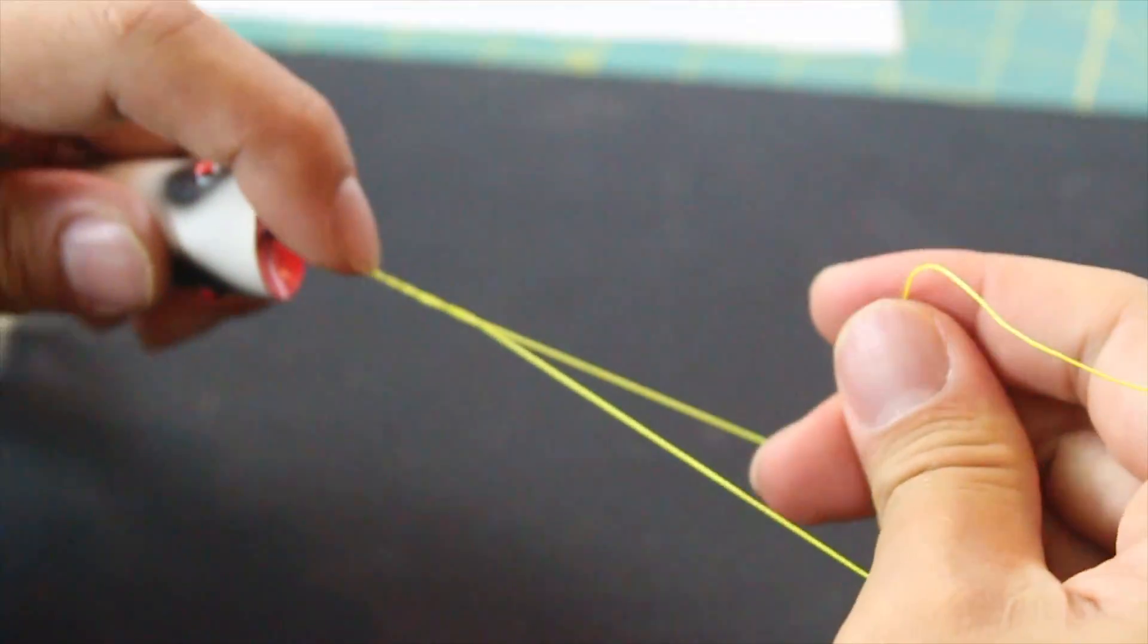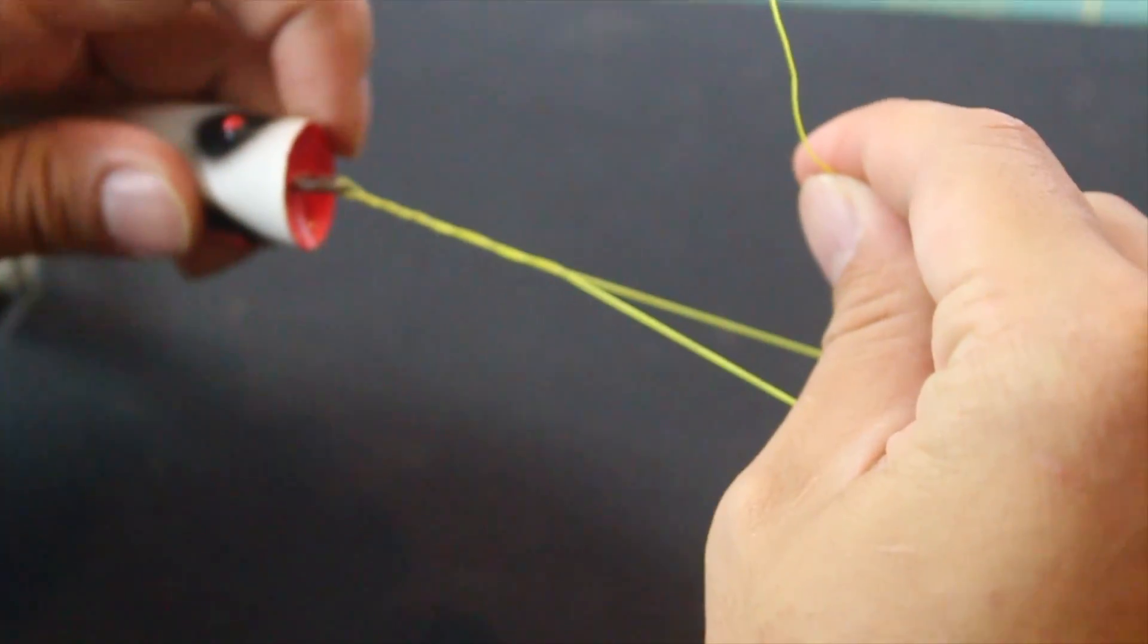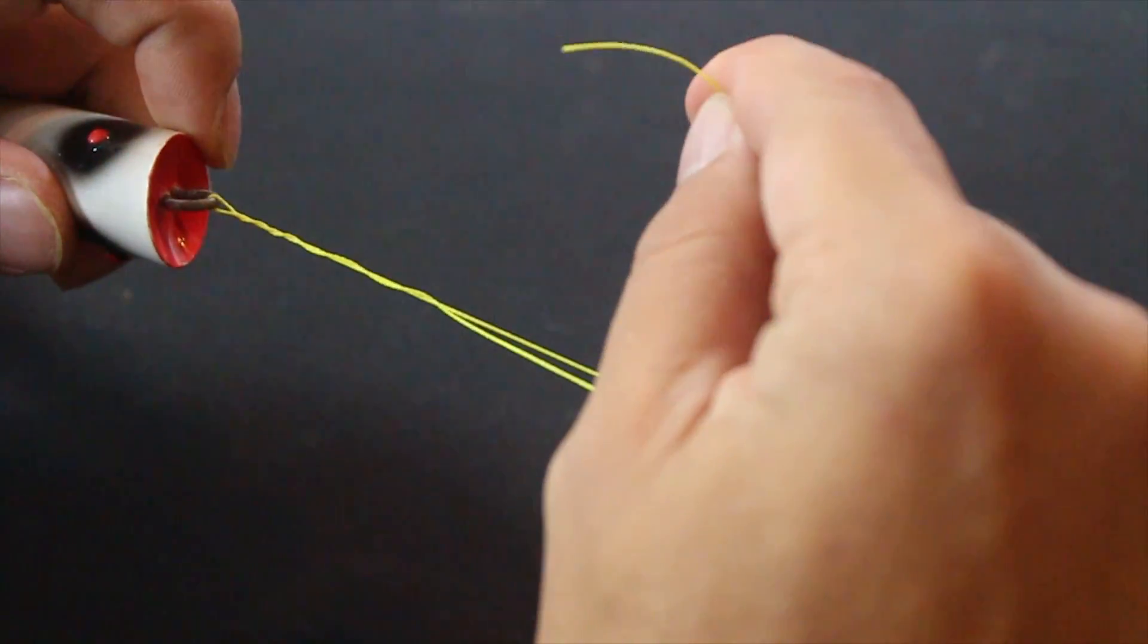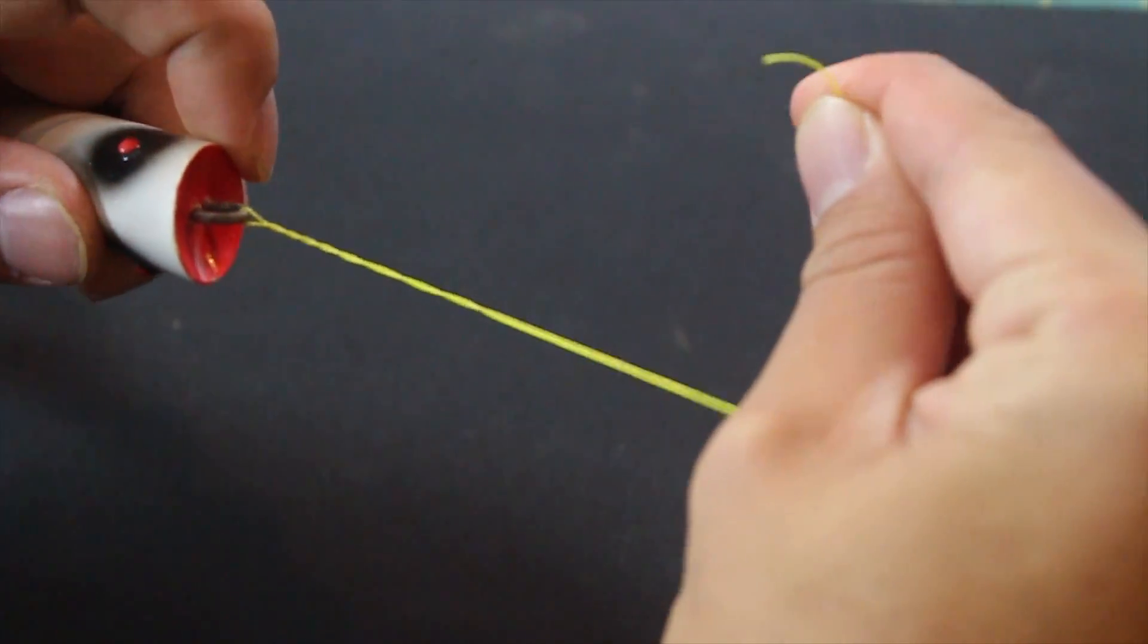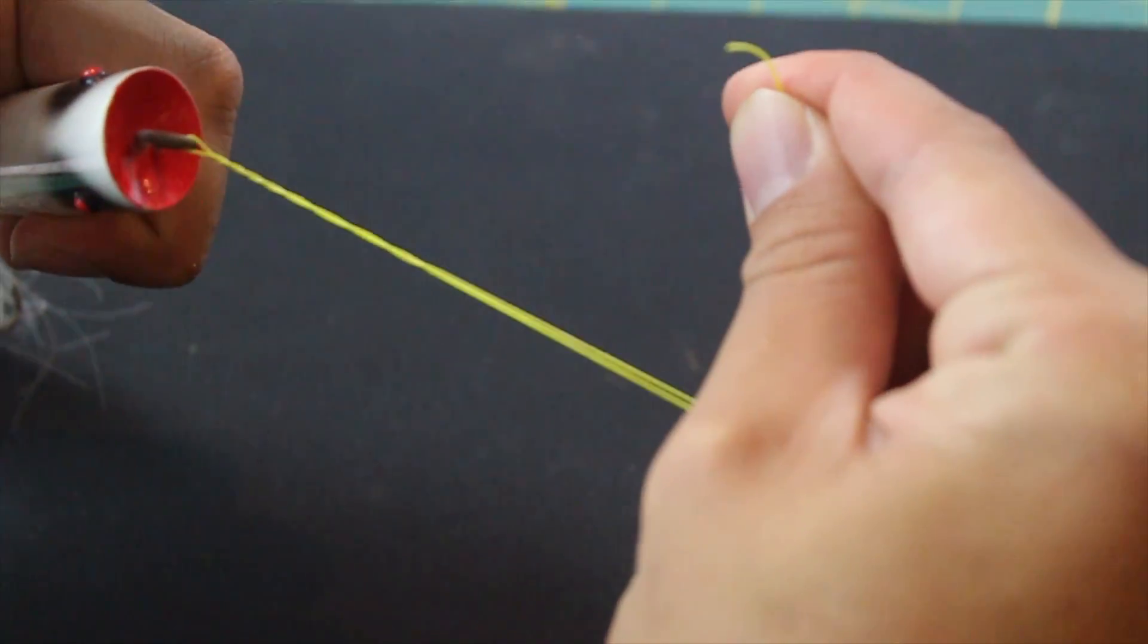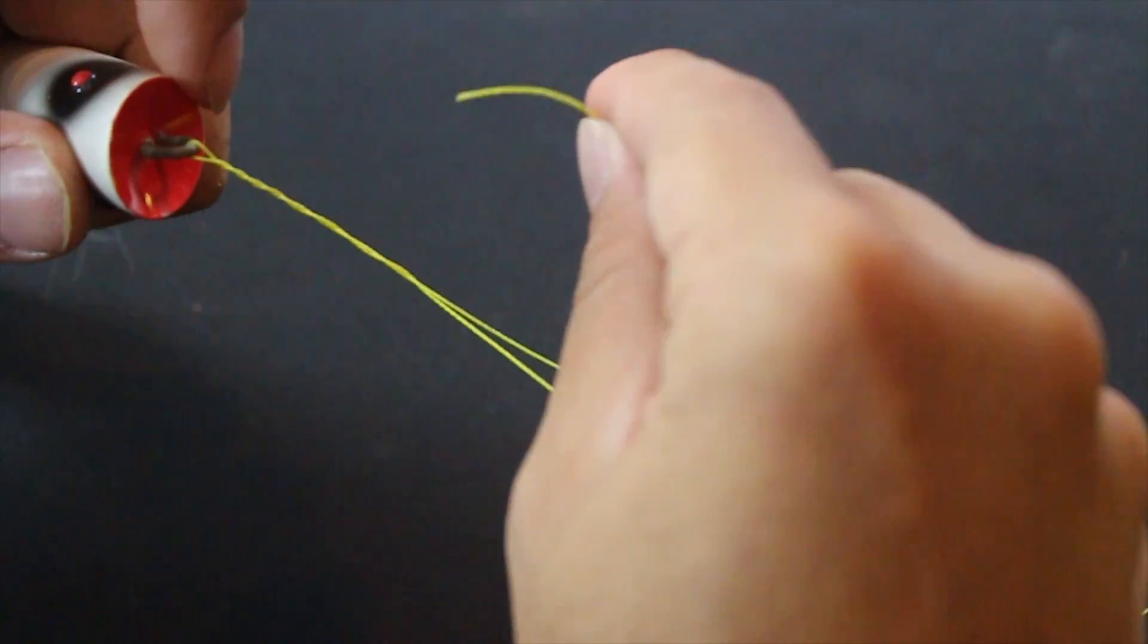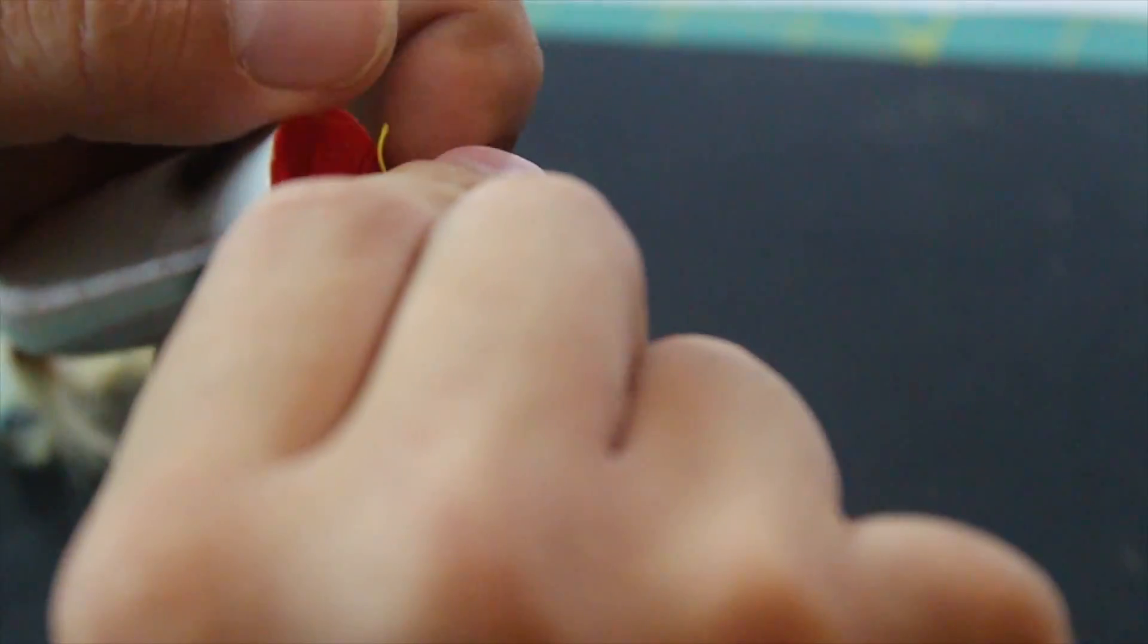Take this tag end. This is the difficult part because you want to keep these twists as tight as possible. So get this tag end while keeping tension on both the lure and the main line. Now put that through, put that through that little hole. Okay.